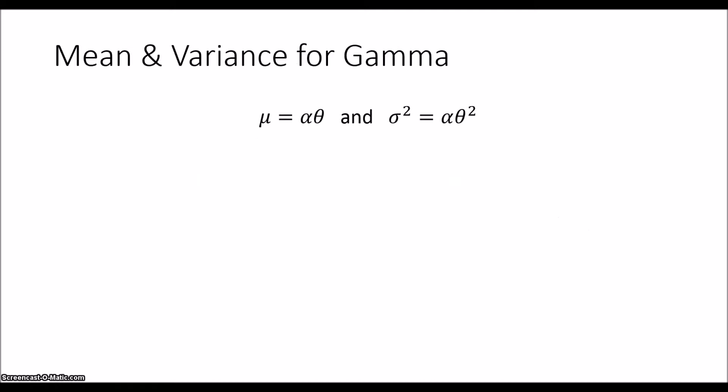The mean and variance for the gamma distribution are μ = αθ. So that's the number of events multiplied by the number of events that we need to occur. So that makes sense. And our variance σ² is equal to αθ².